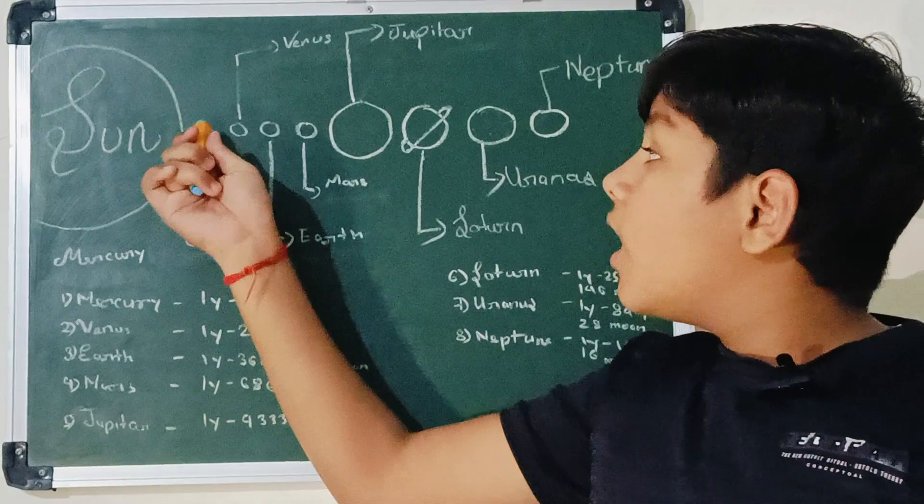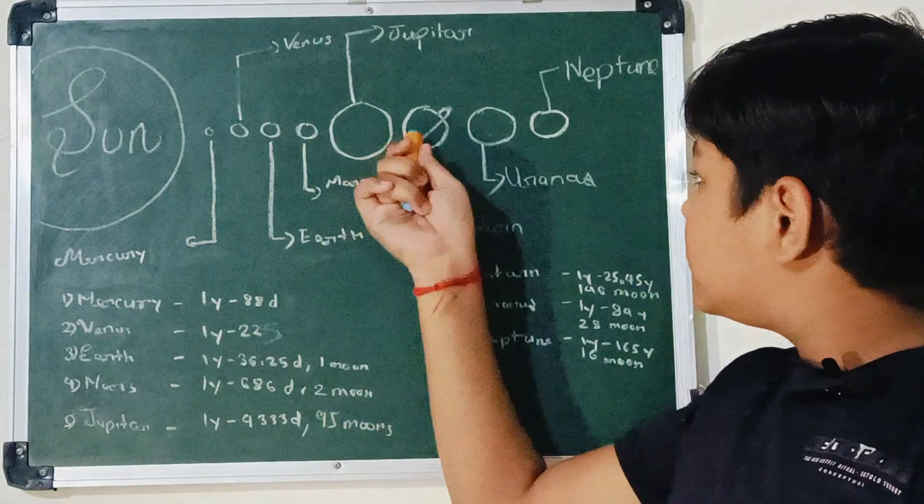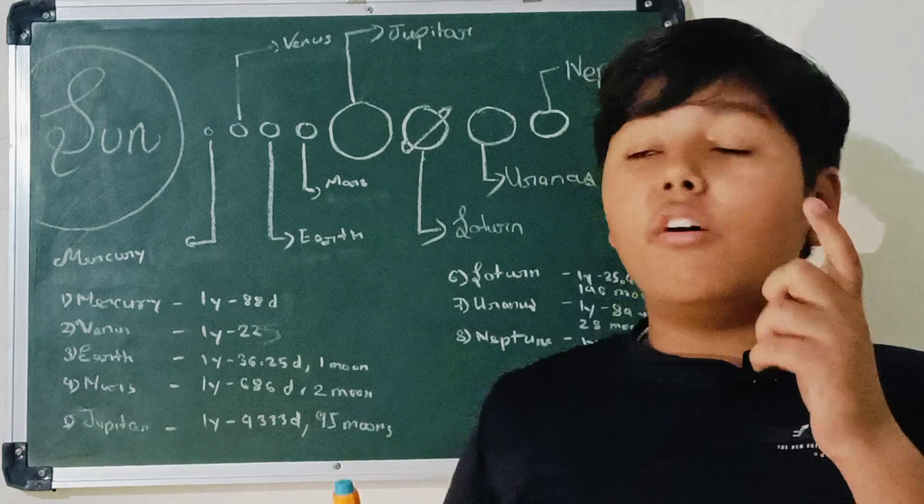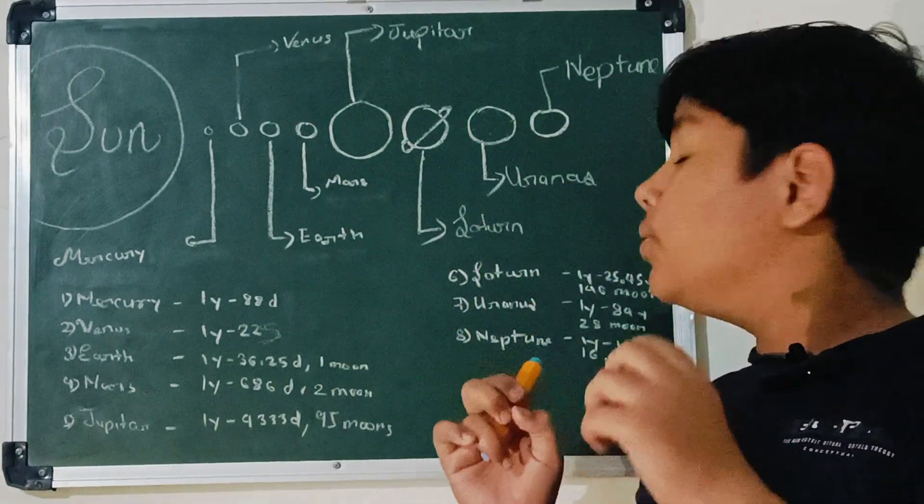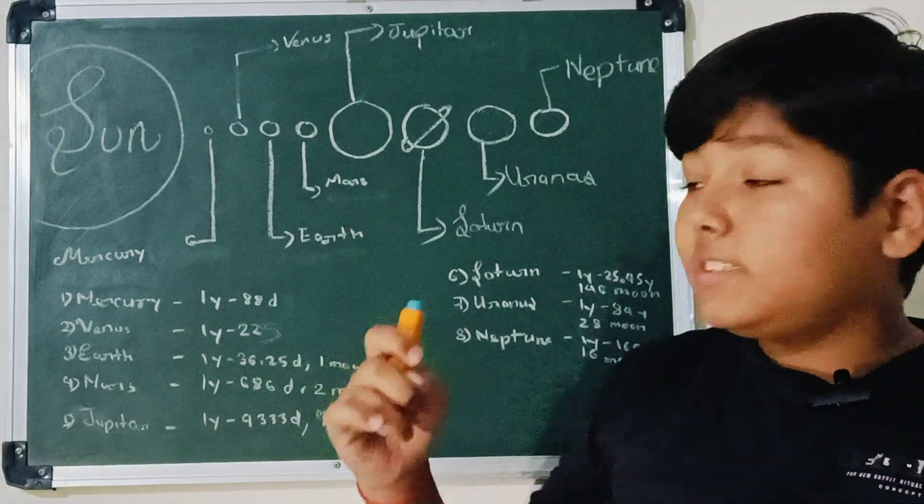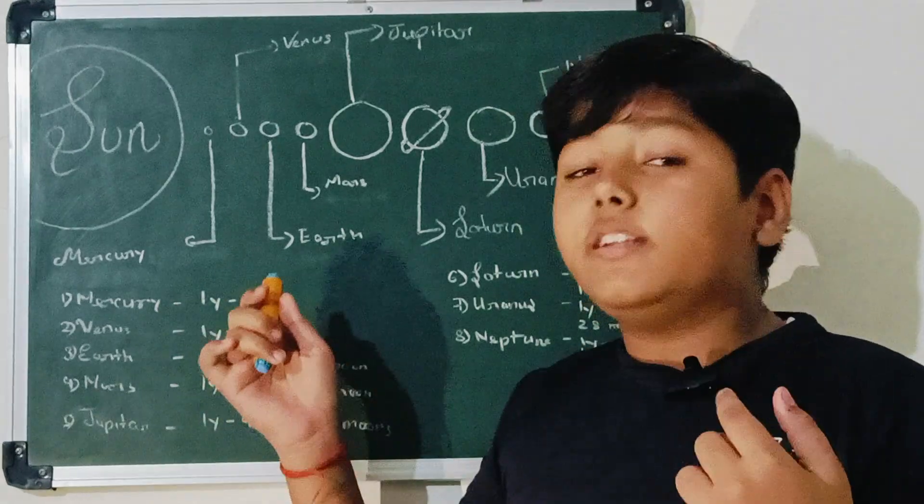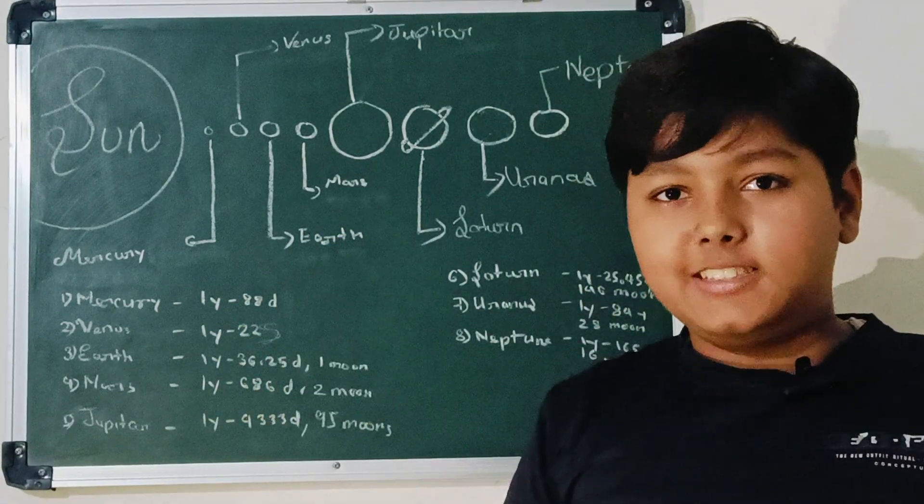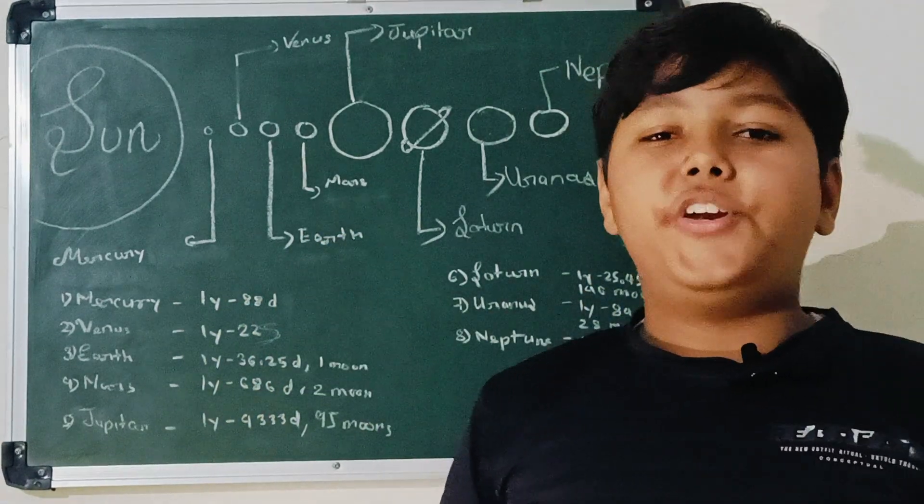And that's why only the time period goes increasing as the last one year of Neptune is equal to 165 years. But in the starting, one year of Mercury is equal to only 88 days. So I hope you liked my video. Thank you.